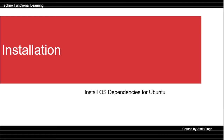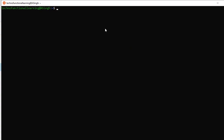Once we have Ubuntu up and running, we will first install the OS dependencies before we install Apache Superset. Type this command to install OS dependencies. It will take 1 or 2 minutes to complete the process, then we can move further.